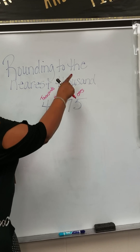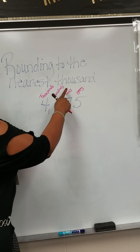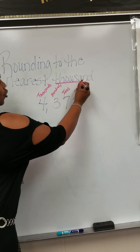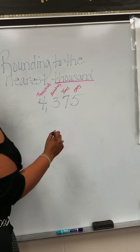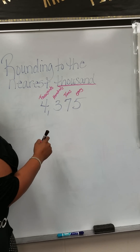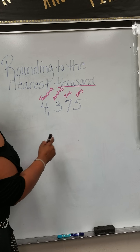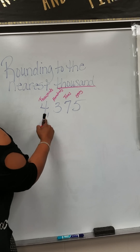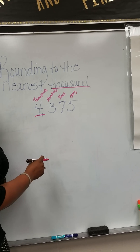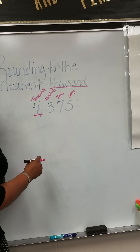So we're rounding to the nearest thousand, and we always underline to make sure that we're rounding in the right place. It says we're rounding to the nearest thousand, so we're going to underline the four because it's in the thousandths place.